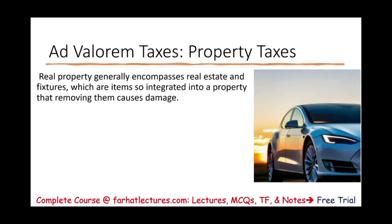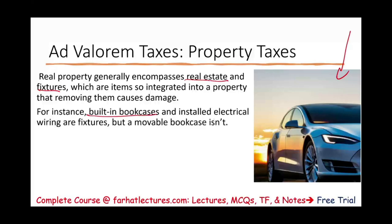Real property taxes generally encompass real estate — buildings and fixtures, which are items so integrated into the property that removing them can cause damage. Something that cannot be moved from one place to another. A car you could always move; a home or office building cannot. For example, a built-in bookcase and installed electrical wiring are fixtures, but a movable bookcase is not. If the bookcase is fixed in the wall and you cannot move it when you sell the house, it's part of the property. If it can be moved, it's personal property.